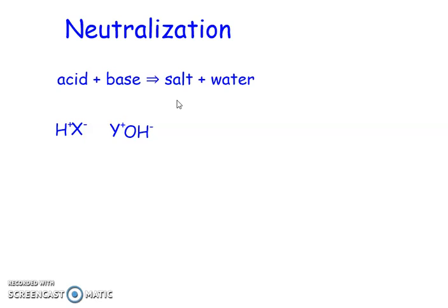Now, by salt, usually people think of sodium chloride, the salt that we put on our foods. But a salt in chemistry is just an ionic compound that's not an acid or a base. So we're going to be forming water and some ionic compound.